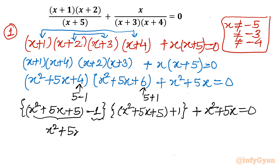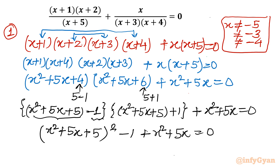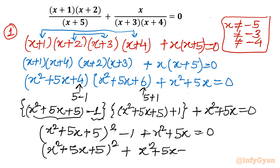Applying the difference of two squares formula, I can write (x² + 5x + 5)² minus 1² plus x² + 5x equal to 0. Rewriting this equation in quadratic form: (x² + 5x + 5)² plus (x² + 5x + 5) minus 6 equal to 0. This is quadratic in (x² + 5x + 5), so you can give the substitution x² + 5x + 5 equal to t easily.